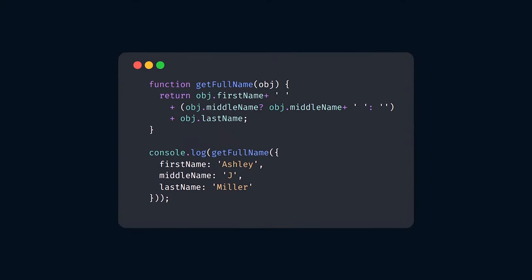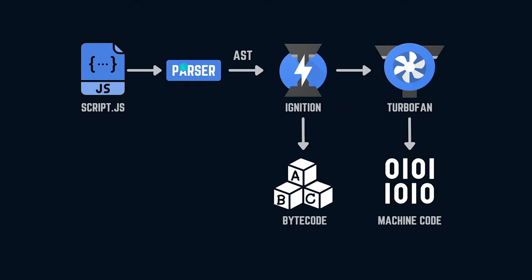Let's explain this with a JavaScript program containing the function getFullName, which takes an object as a parameter consisting of firstName, middleName, and lastName properties. The function returns the generated fullName. Since middleName is optional, we have a ternary operator to append it between firstName and lastName if it is present. For the rest of the discussion, only this function declaration is used.